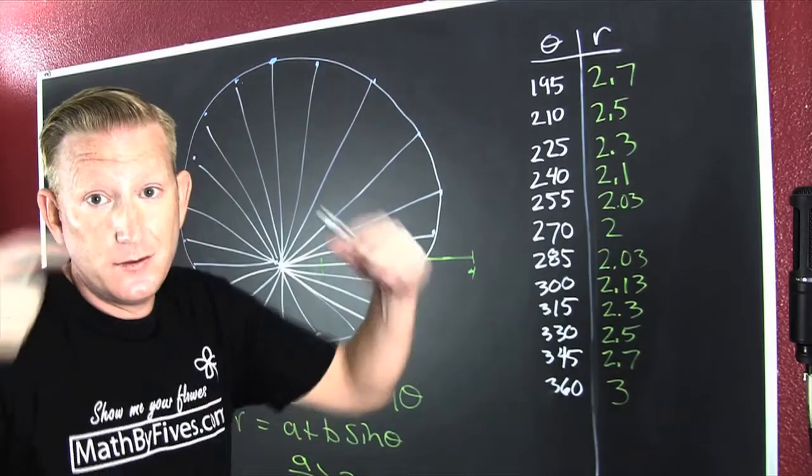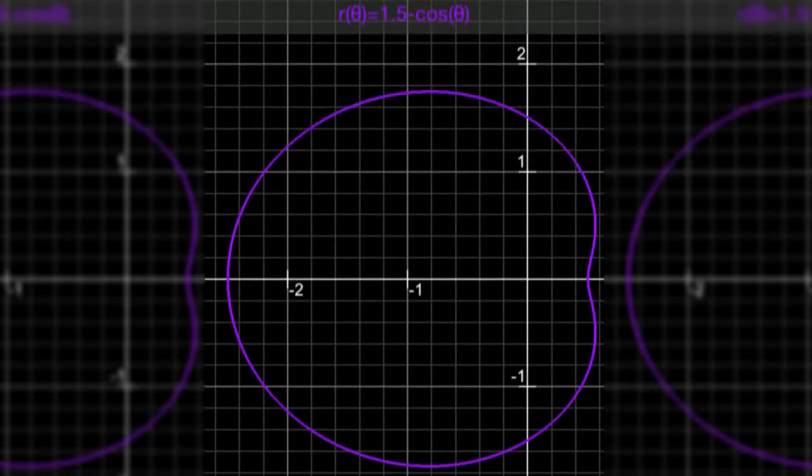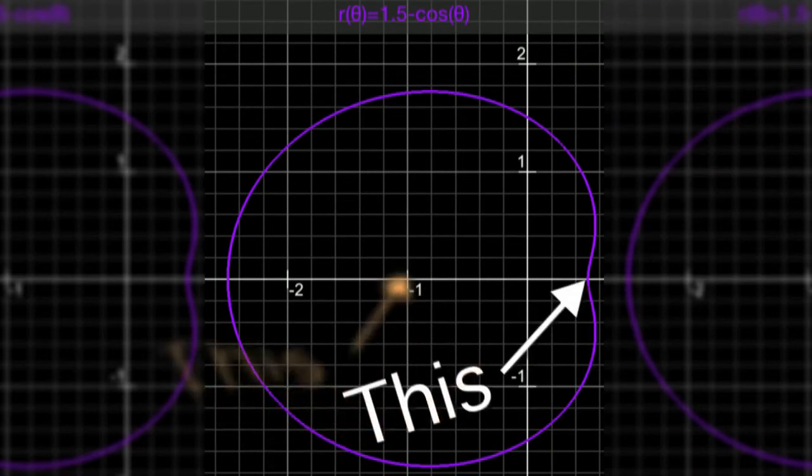1.5 minus cosine theta is also a cardioid, but this time the constant isn't bigger than the coefficient, so it never actually reaches zero. But you do get that kink when the cosine is zero, and you do get that multiple when it's pi.